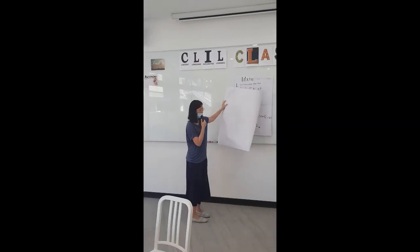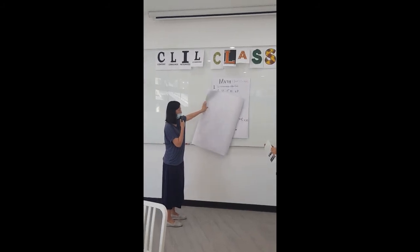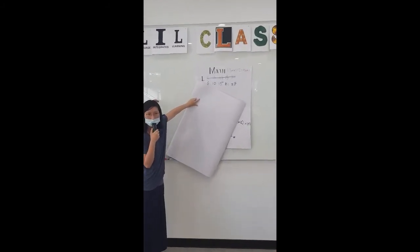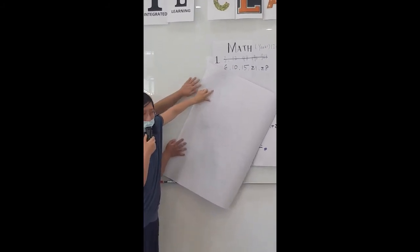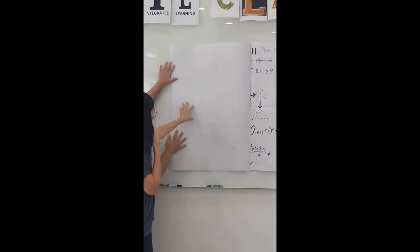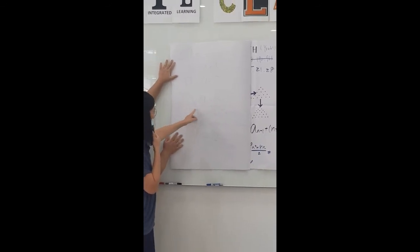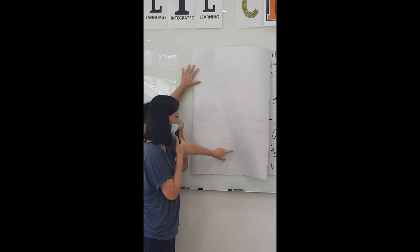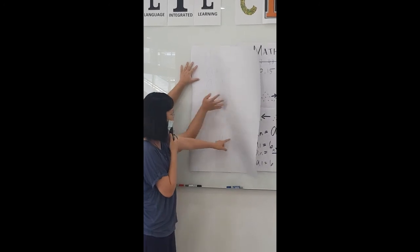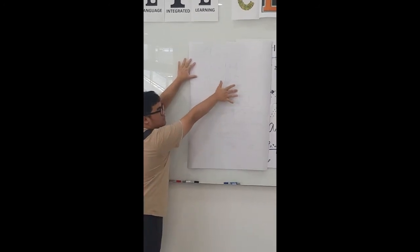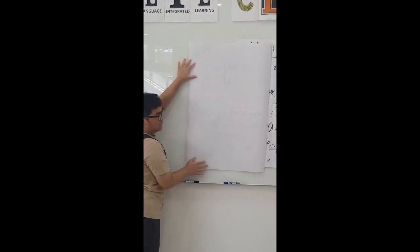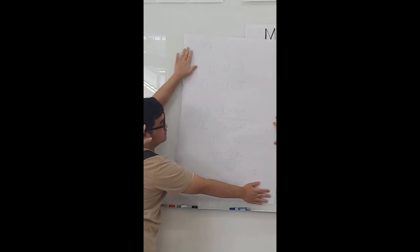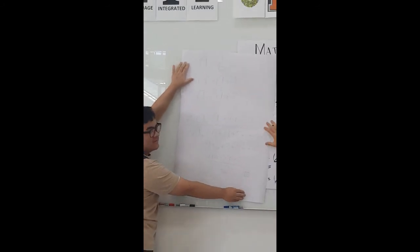Your general term should look like this — if you have another way to find a general term, that's fine too. You'll actually find that A_n equals (n + 3)(n + 2) divided by two. That's OK — just a small mistake, that's OK.